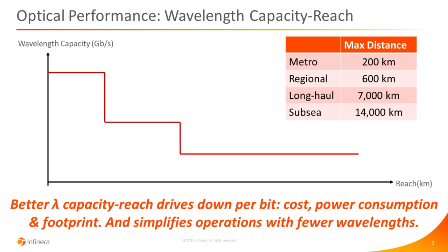Let's talk about optical performance. The most obvious metric you hear most often when we talk about 800G generation performance is the wavelength capacity reach — for a particular wavelength at a particular data rate, how far can it go? Or to put it another way, if we have a particular reach requirement, what speed can we run that wavelength at? This is really about distance and data rate: typically a couple of hundred kilometers in the metro, 600 kilometers for regional, and long haul up to maybe 7,000 kilometers and even longer for subsea. As we get better wavelength capacity reach, that helps us drive down cost per bit and power consumption.